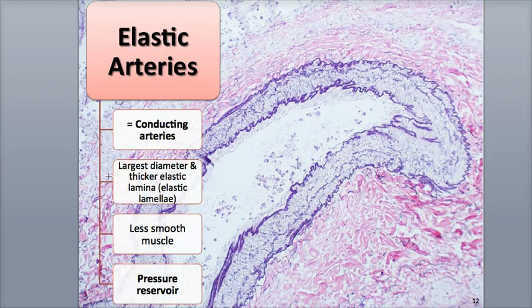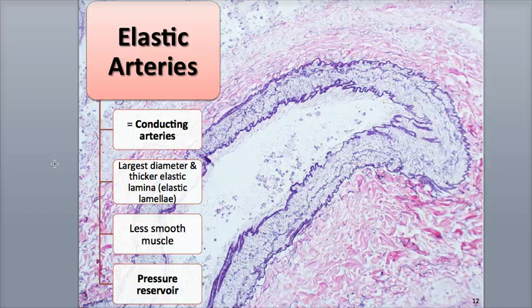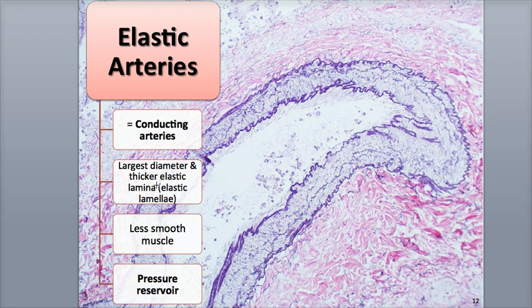Elastic arteries have the largest diameter and are the largest arteries in the body, but have thin walls relative to the vessel's overall size. The largest are as thick as garden hoses; the smallest are as thick as your fingers. They have well-developed internal and external elastic laminae and a thick tunica media with an abundance of elastic fibers called the elastic lamellae.